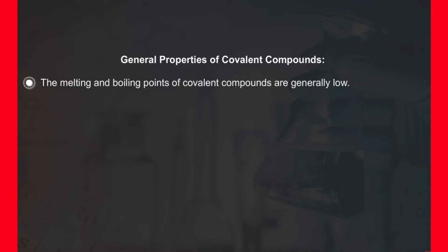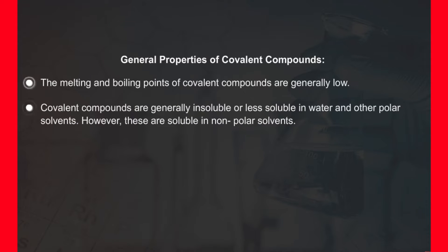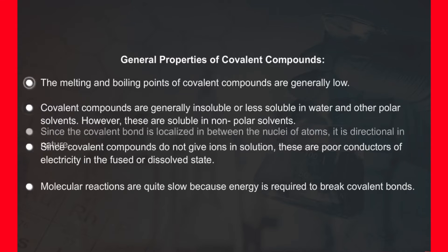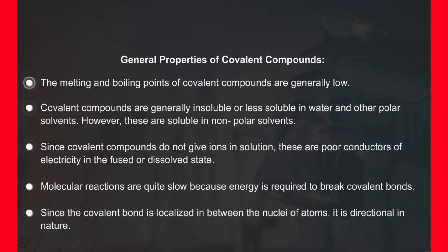General properties of covalent compounds: The covalent compounds do not exist as ions but they exist as molecules. The melting and boiling points of covalent compounds are generally low. Covalent compounds are generally insoluble or less soluble in water and other polar solvents. However, these are soluble in non-polar solvents. Since covalent compounds do not give ions in solution, these are poor conductors of electricity in the fused or dissolved state. Molecular reactions are quite slow because energy is required to break covalent bonds. Since the covalent bond is localized in between the nuclei of atoms, it is directional in nature.